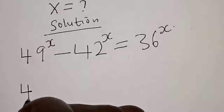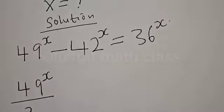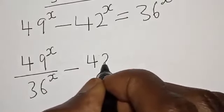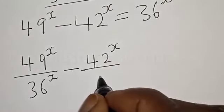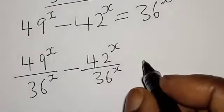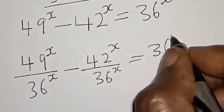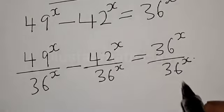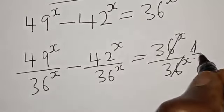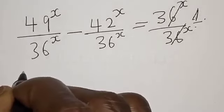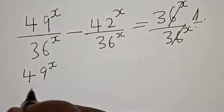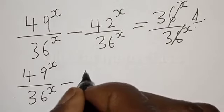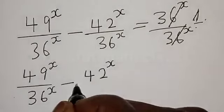That is, we have 49 raised to power s divided by 36 raised to power s, minus 42 raised to power s divided by 36 raised to power s, is equal to 36 raised to power s divided by 36 raised to power s. Then this one will cancel this, which equals 1.